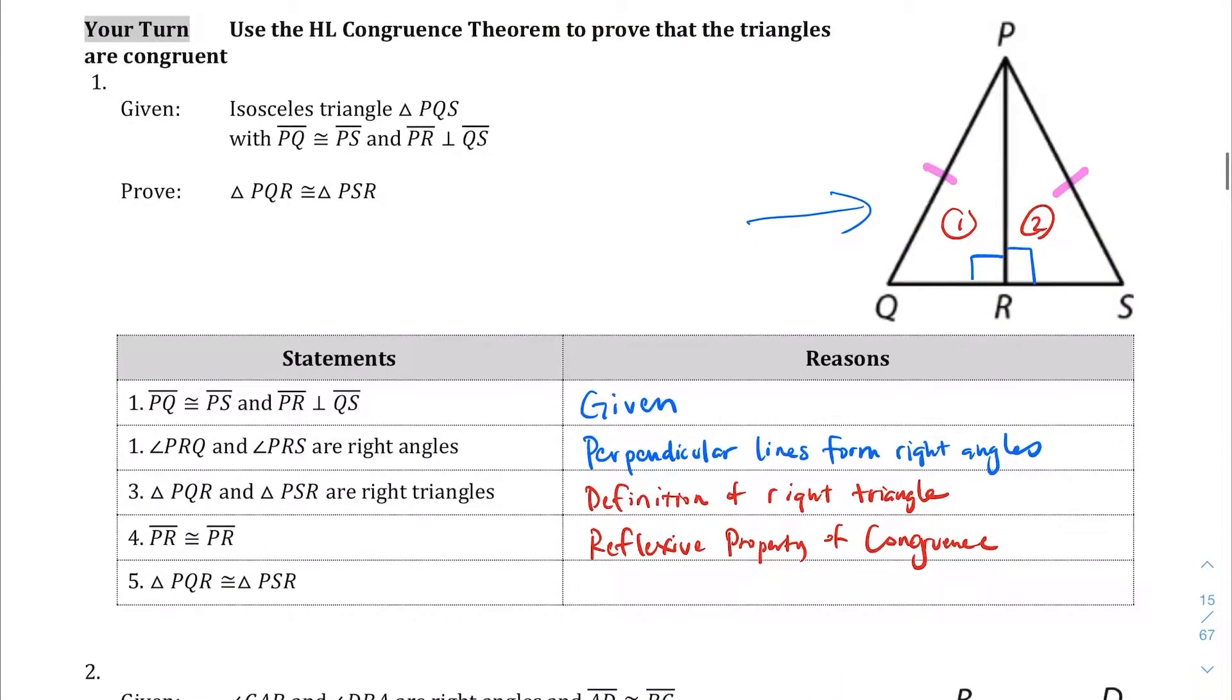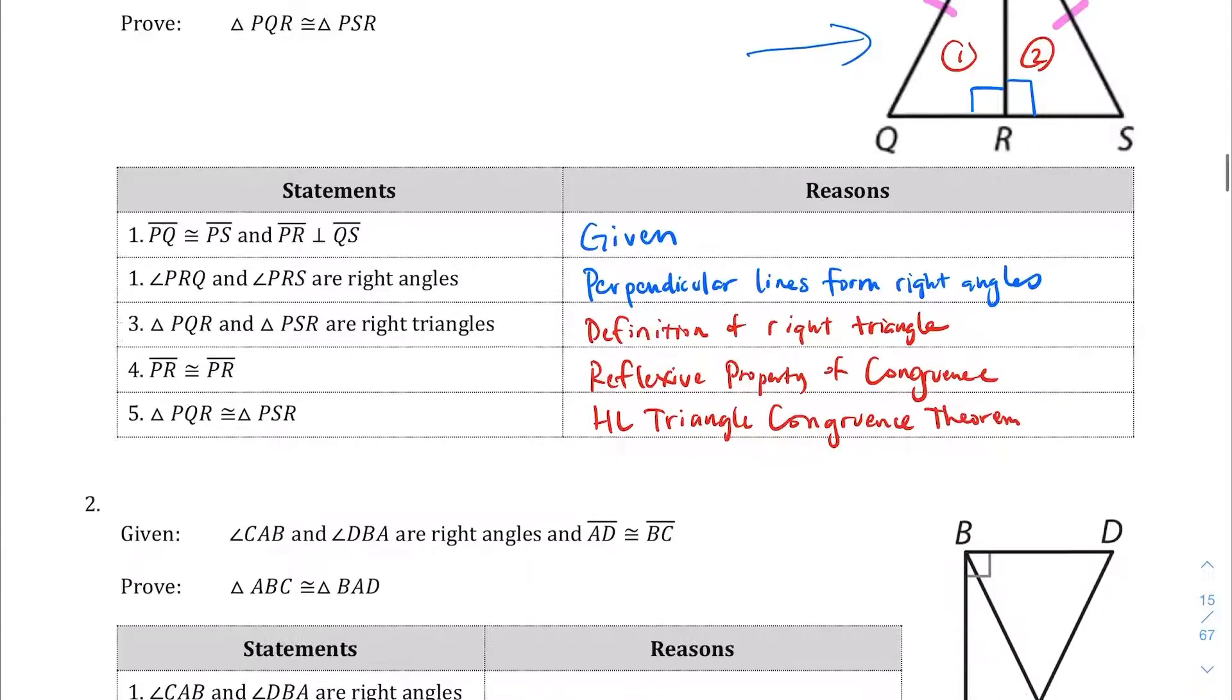And lastly, because we have a hypotenuse that we've established is the same, and we've established that it's a right triangle, we've established that it shares that side, based on the reflexive property of congruence, we can conclude that those two triangles are the same or congruent because of the hypotenuse leg triangle congruence theorem.